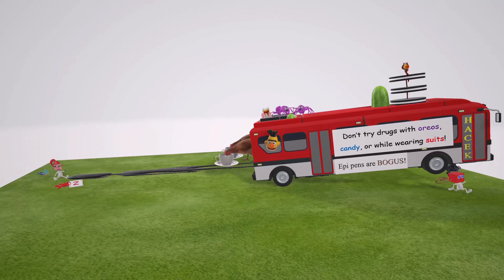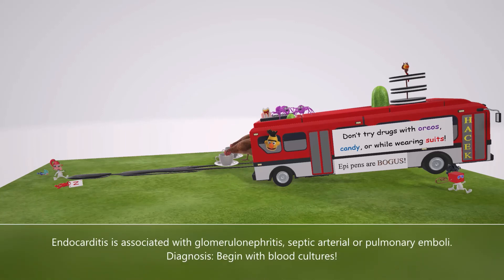A few high-yield facts: endocarditis may be associated with glomerulonephritis, septic emboli, or pulmonary emboli. The initial test for endocarditis is blood culture, because cultures are extremely sensitive for endocarditis. So if a patient presents with fever and murmurs, we need to get cultures and start antibiotics.